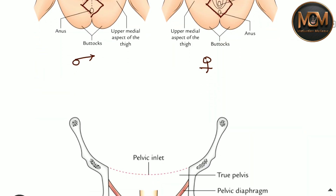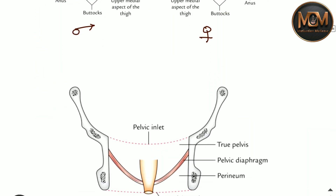This perineum is present below the pelvic diaphragm. The space present below the pelvic diaphragm, up to the pelvic outlet, is where the perineum is present.